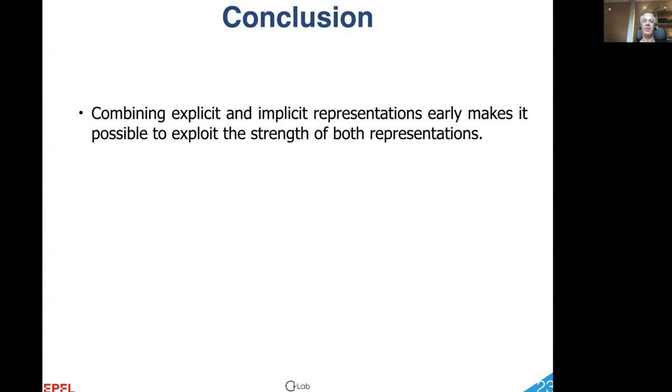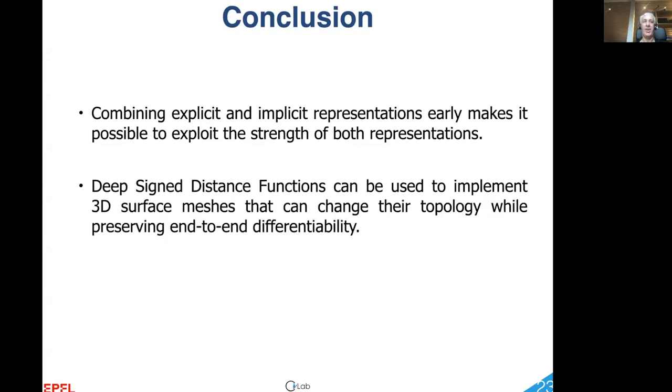First, combining implicit and explicit surfaces at an early stage of a deep net architecture is beneficial. Second, deep signed distance functions can be used to represent explicit surfaces while preserving end-to-end differentiability.